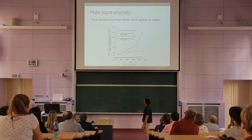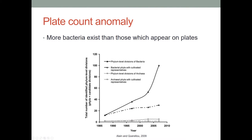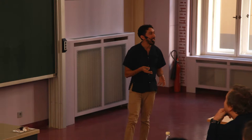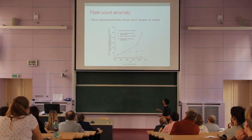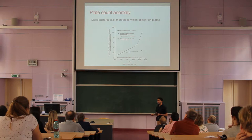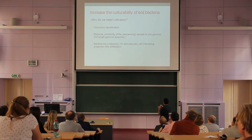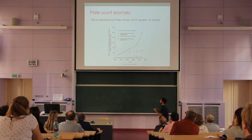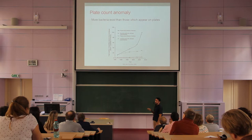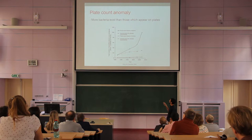A lot of bacteria we know today have been only described based on their genomic information. If you see this graph, starting from the middle of the 1980s, the amount of bacteria described based on their sequences has increased almost exponentially in recent years. The amount of bacteria we have actually seen on plates and can characterize further has increased only linearly, mainly because a lot of bacteria in nature cannot be cultured. This phenomenon is known as the great plate count anomaly — we have a lot of bacteria in the environment which we know about, but only a small amount which we can actually culture.